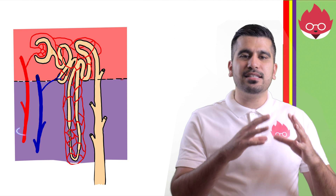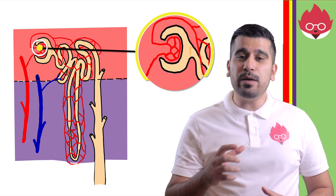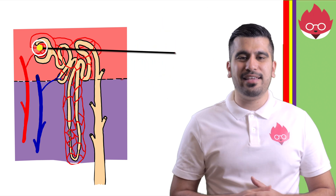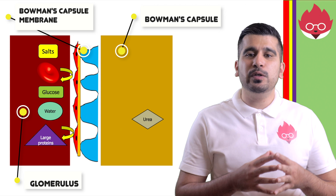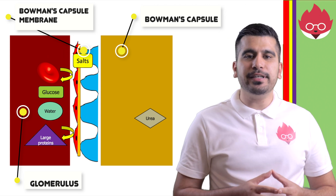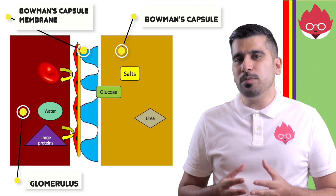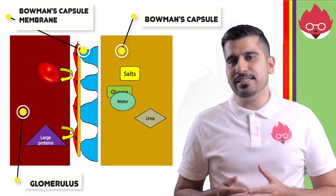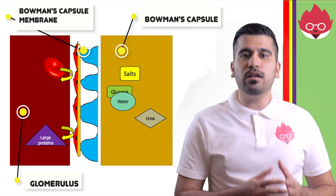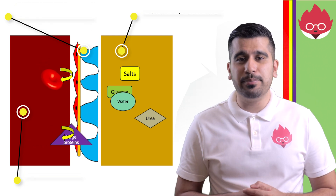Blood enters the glomerulus at high pressure. The glomerulus is a network of capillaries found in the kidneys. Due to the high pressure, blood forces out glucose, water, urea and salts into the Bowman's capsule, forming a filtrate. The Bowman's capsule membrane filters what enters, preventing larger molecules like red blood cells and large proteins from crossing the membrane. This process is known as ultrafiltration.